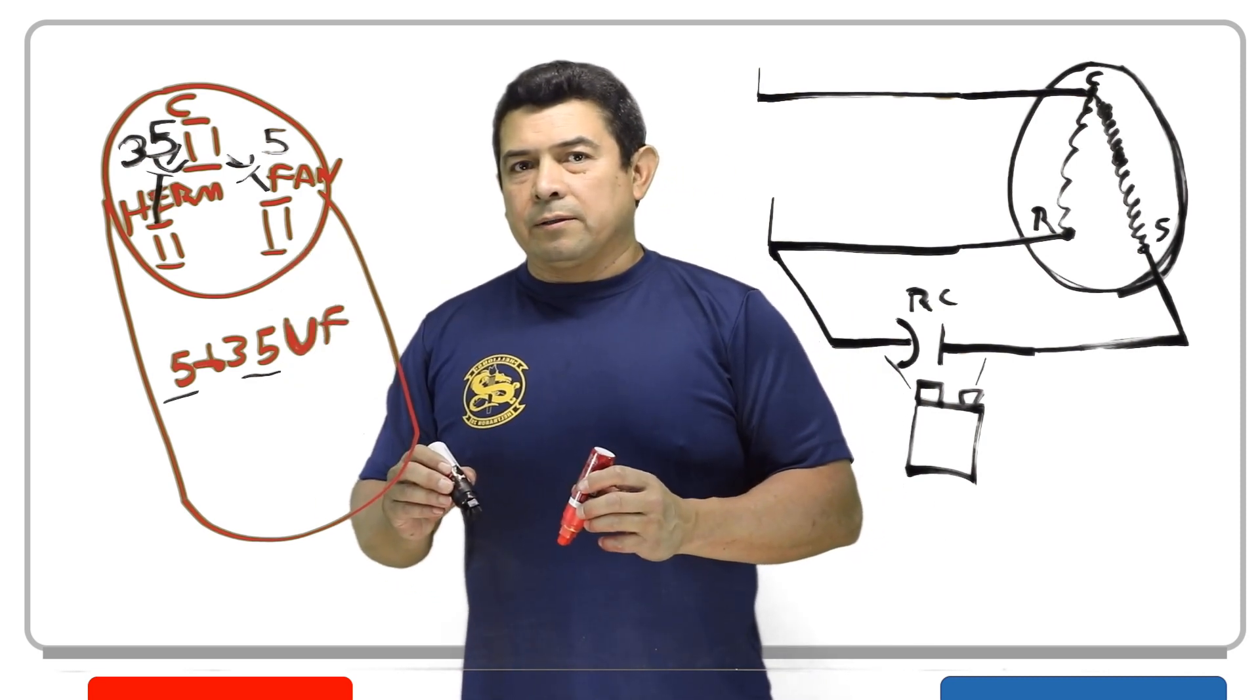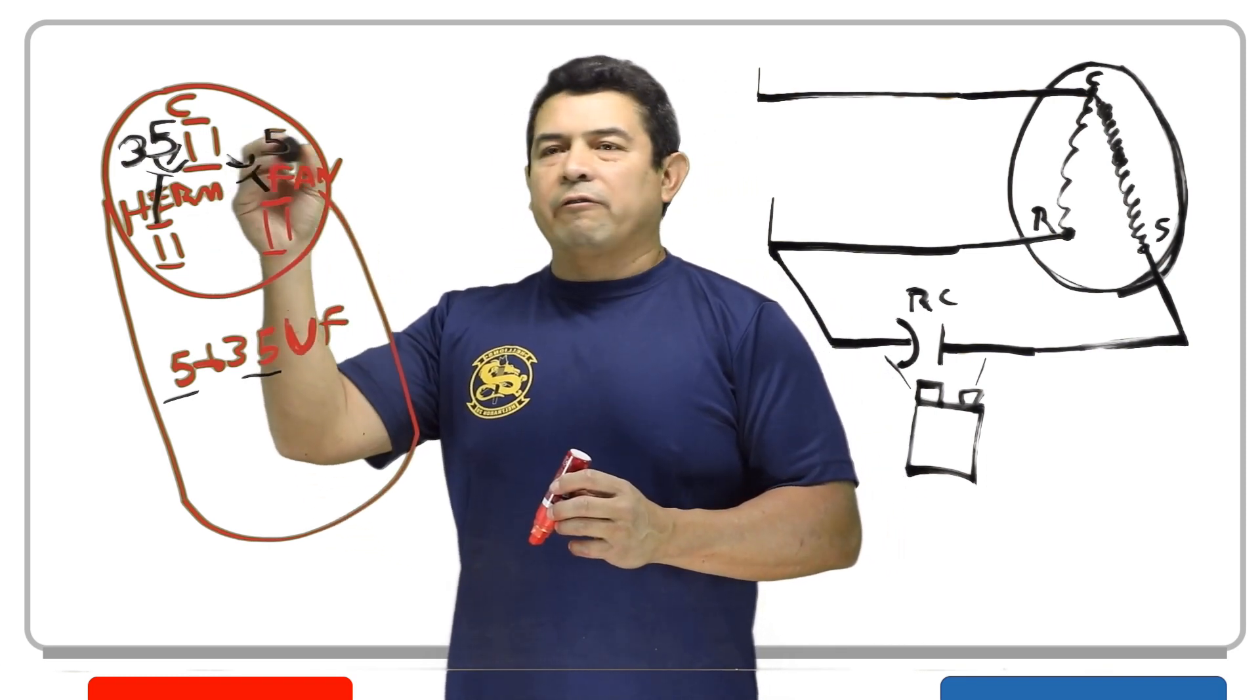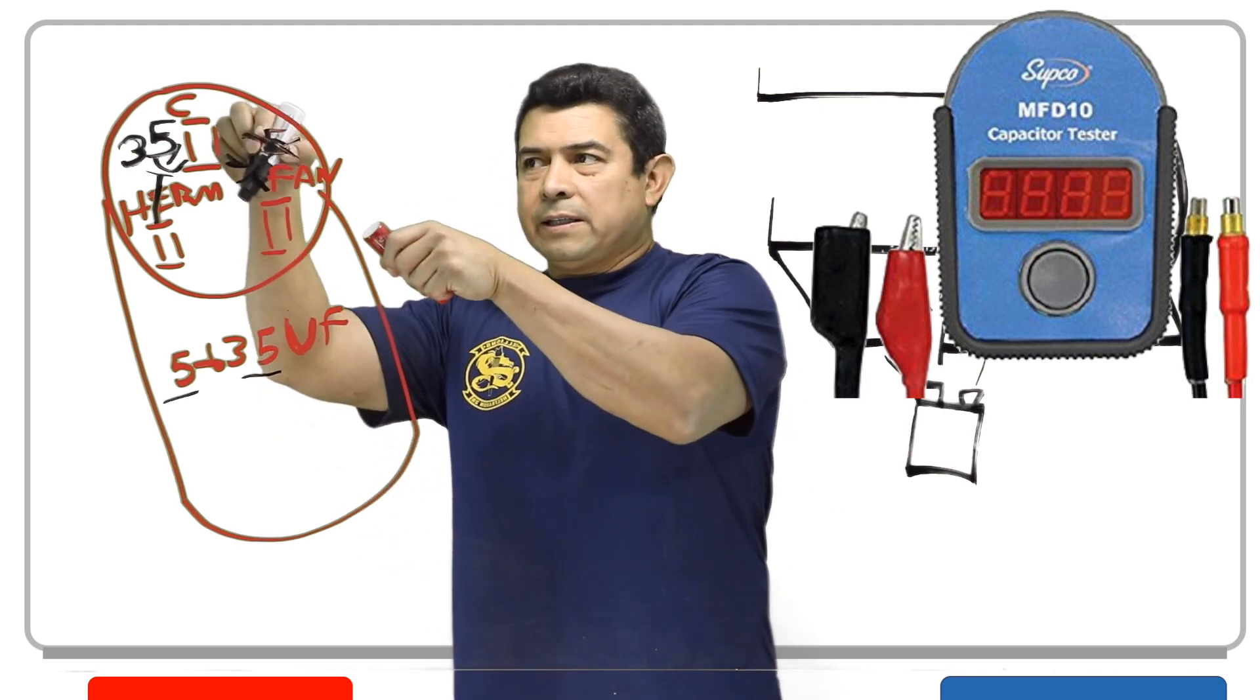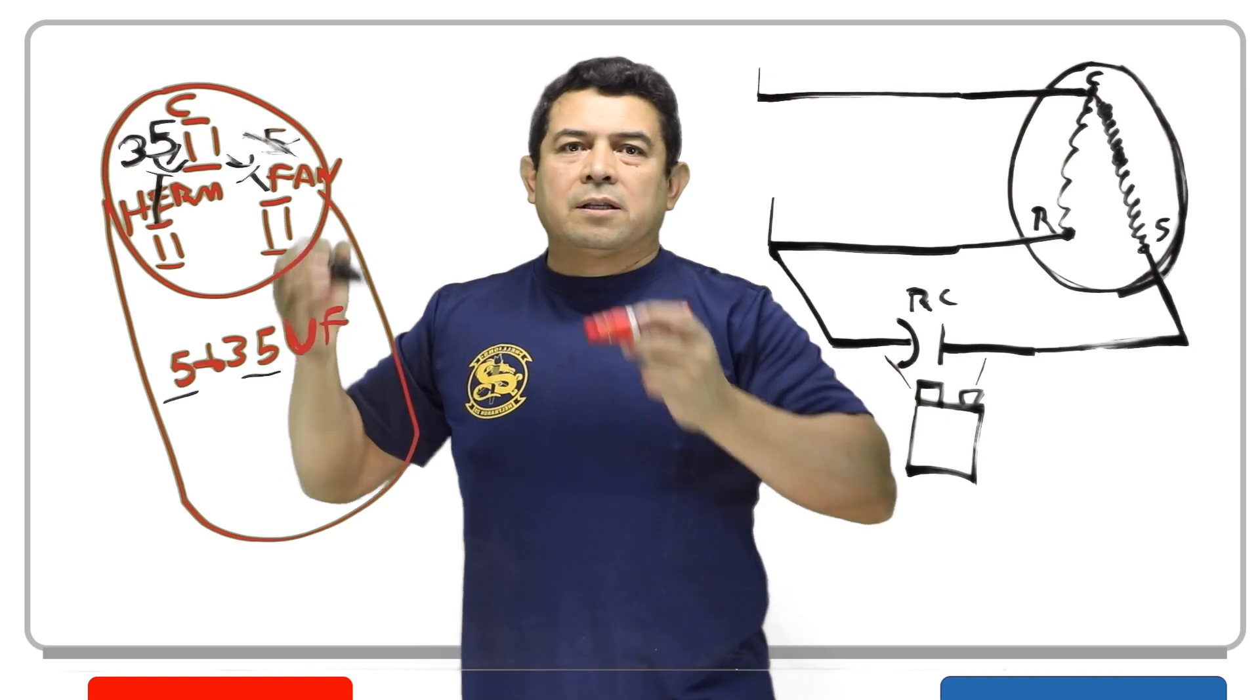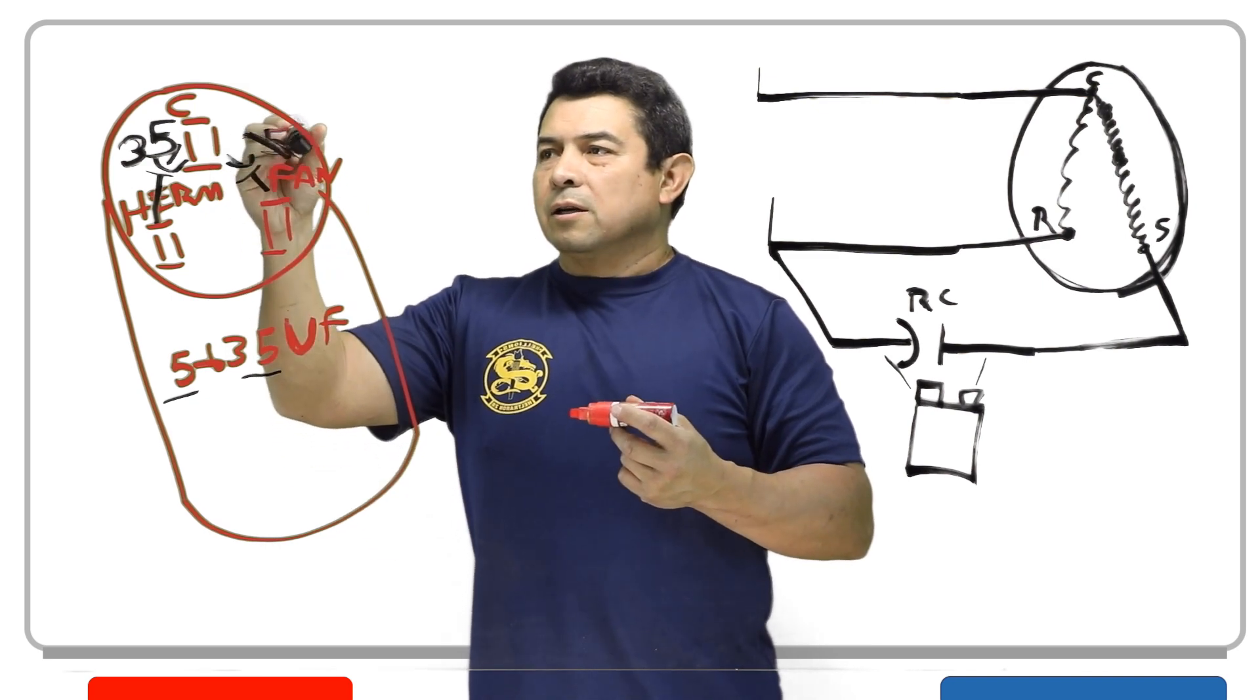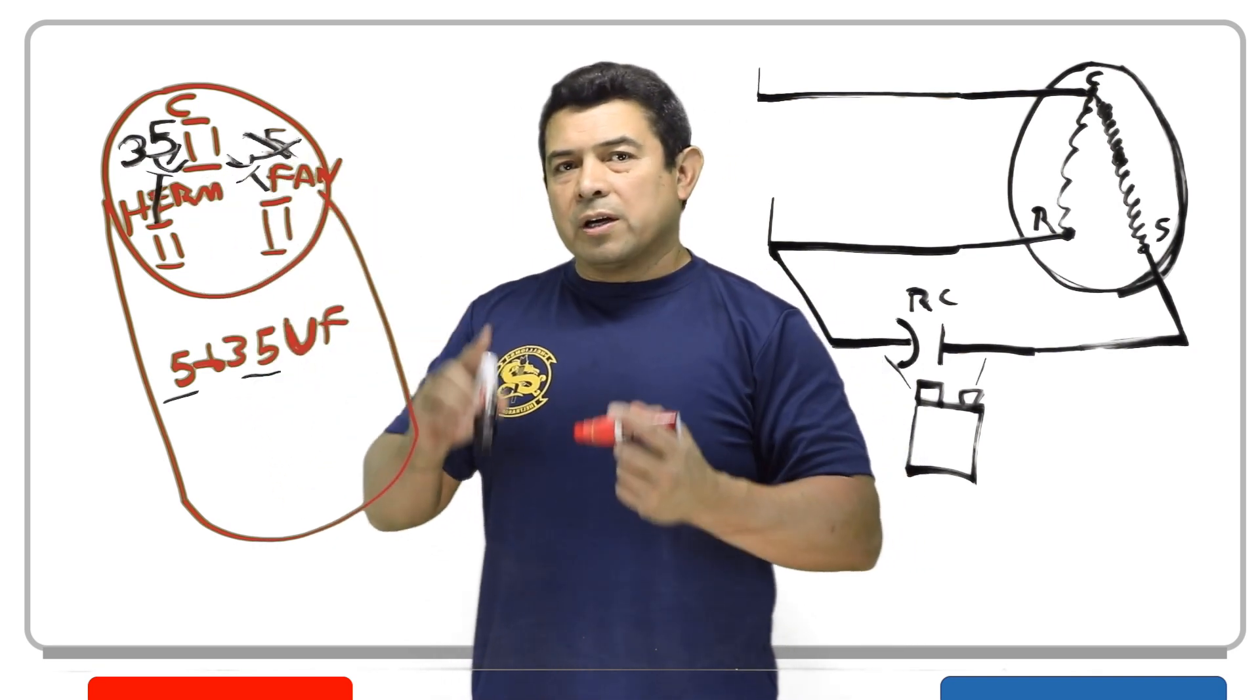If you get to the job site and let's say one of these is bad, let's say that 5 microfarads, that side is bad. Because you took your capacitor tester and you test it from common to fan, and let's say you've got one or let's say you've got open, there's nothing there. Well, that tells me that this capacitor right here is bad, or this side of it is bad. This one is good, but that side of it is bad. So now you have a choice.